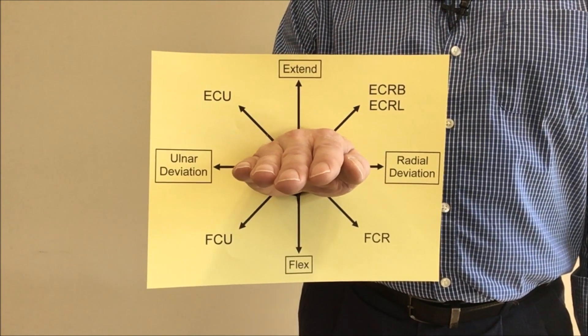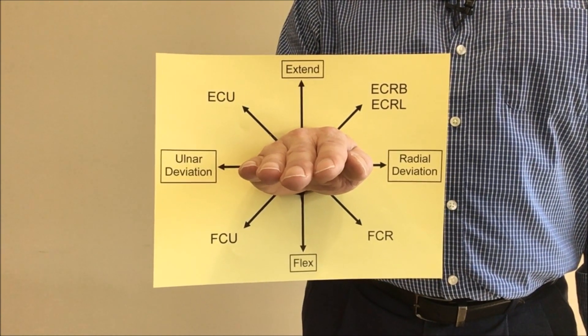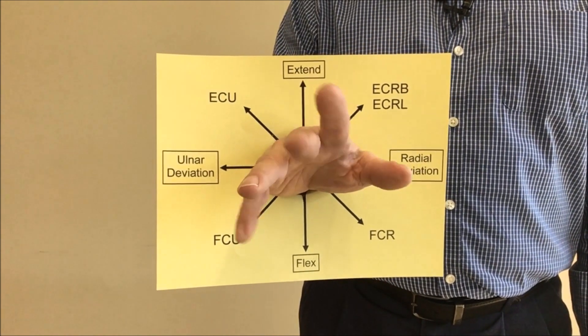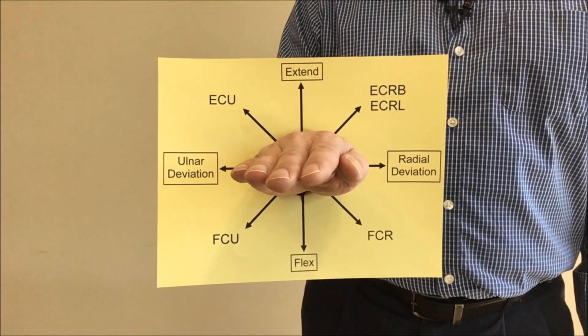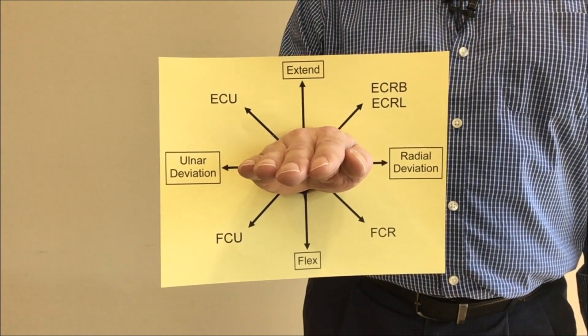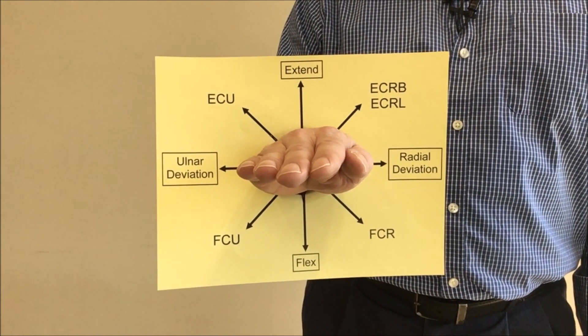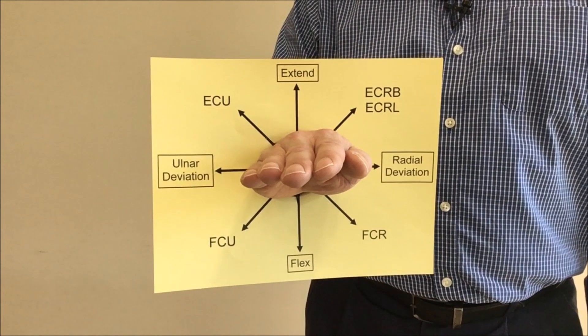First let's just look at the wrist and the motions that it makes. So here we have my hand and then we have on this card labeled the cardinal plane motions and then also the motions for each of the individual wrist muscles.